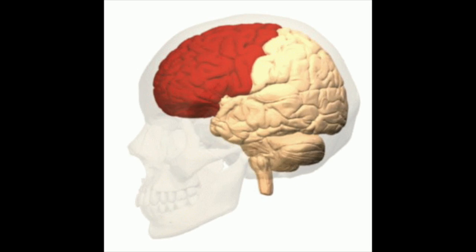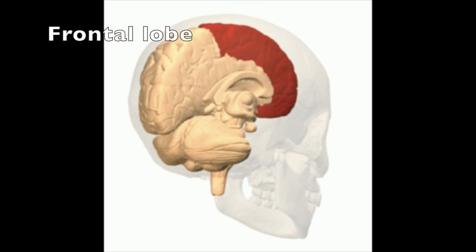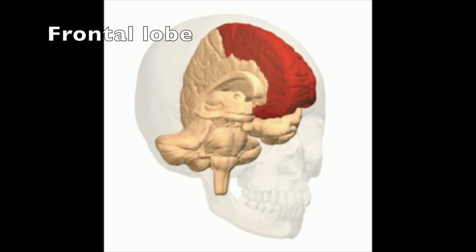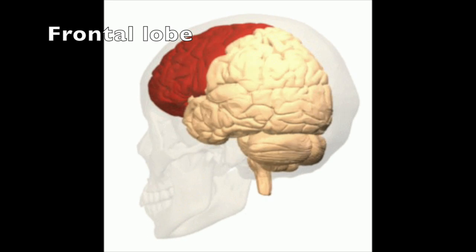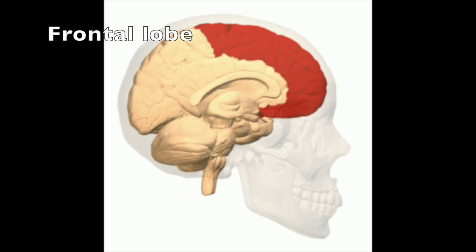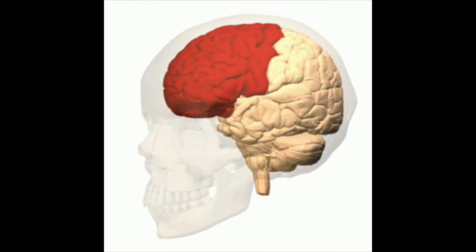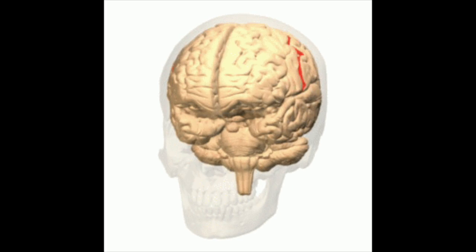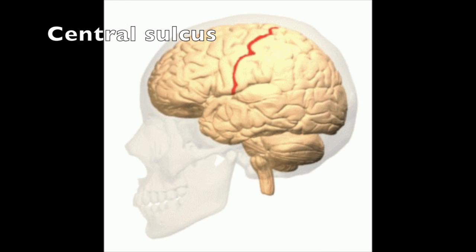The frontal lobe has association areas that carry on higher intellectual processing, like concentration, problem solving, or judging the consequences of behavior. It also has motor areas that control voluntary skeletal muscle movement. It's bordered on the posterior side by the central sulcus, or the fissure of Rolando.